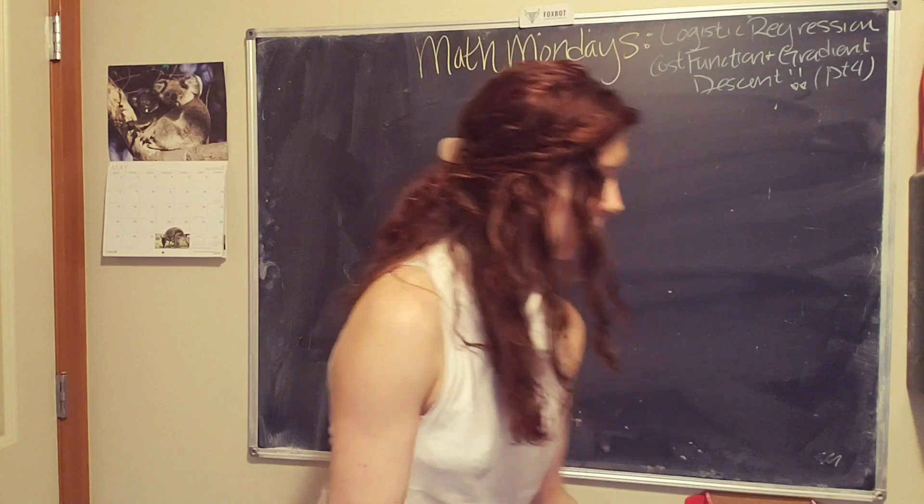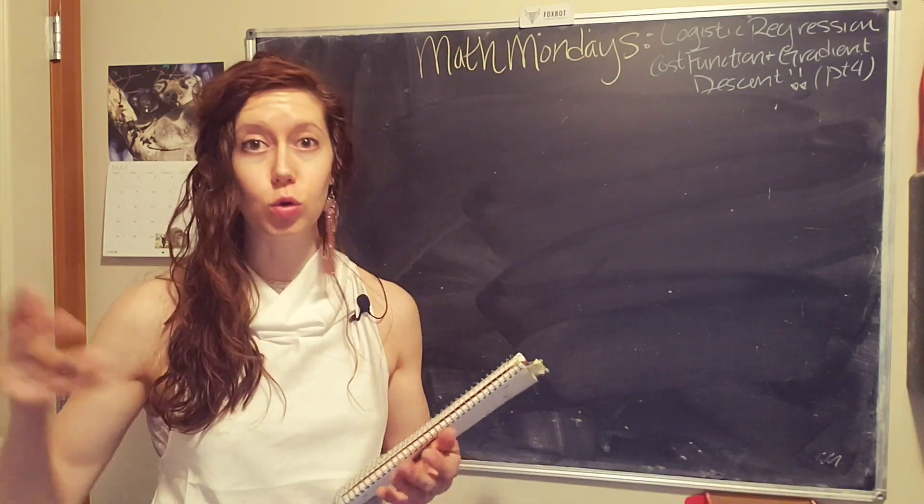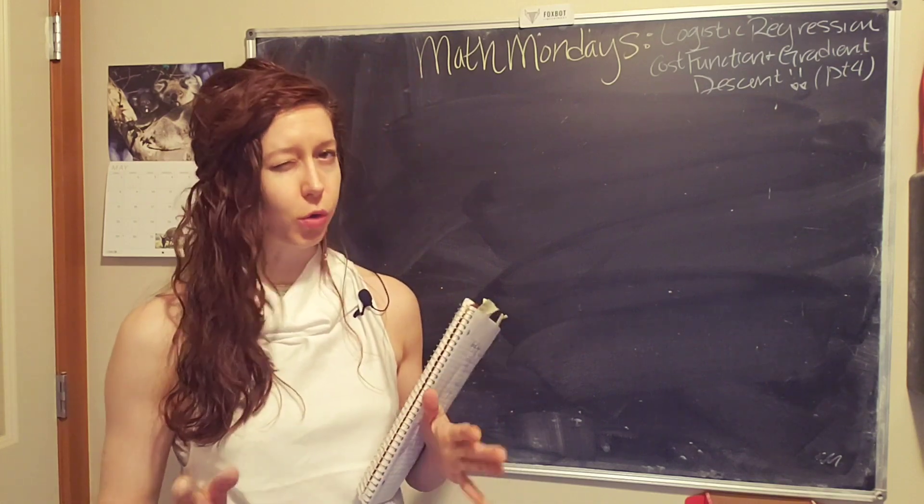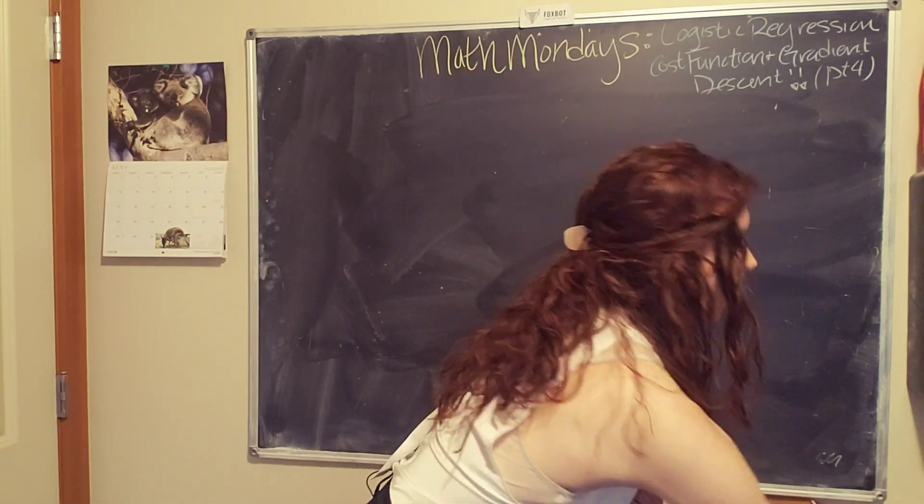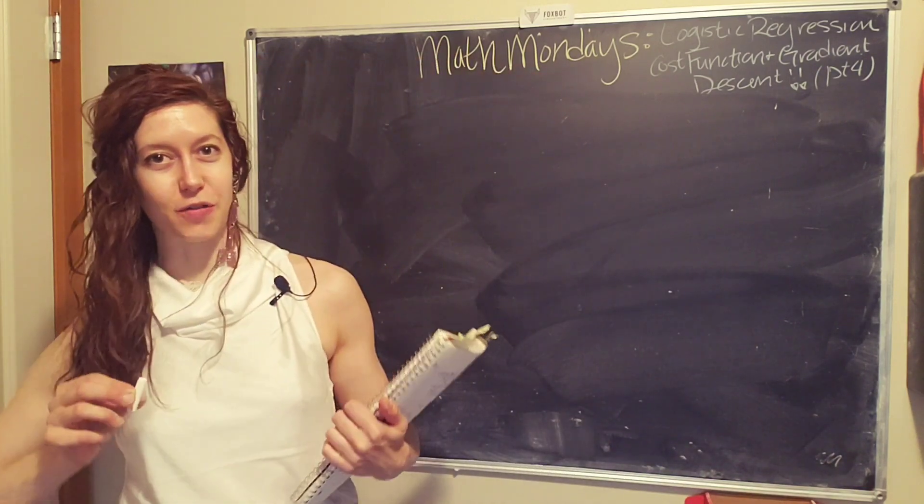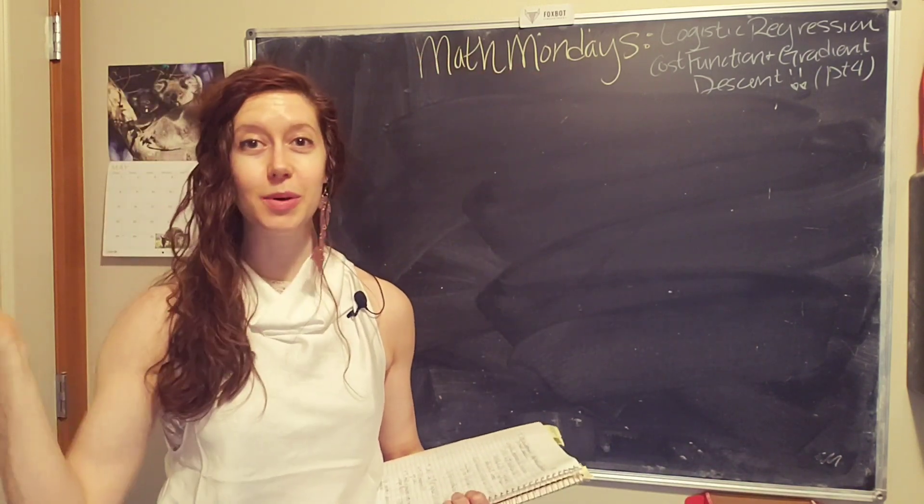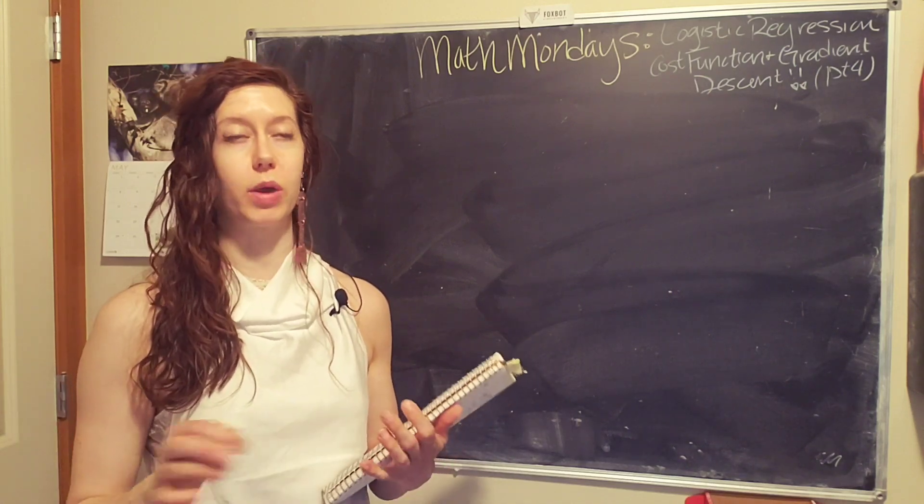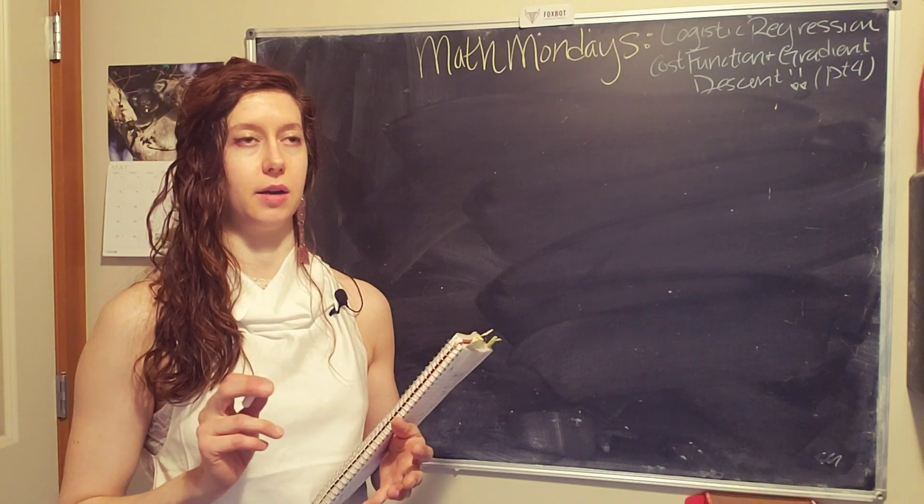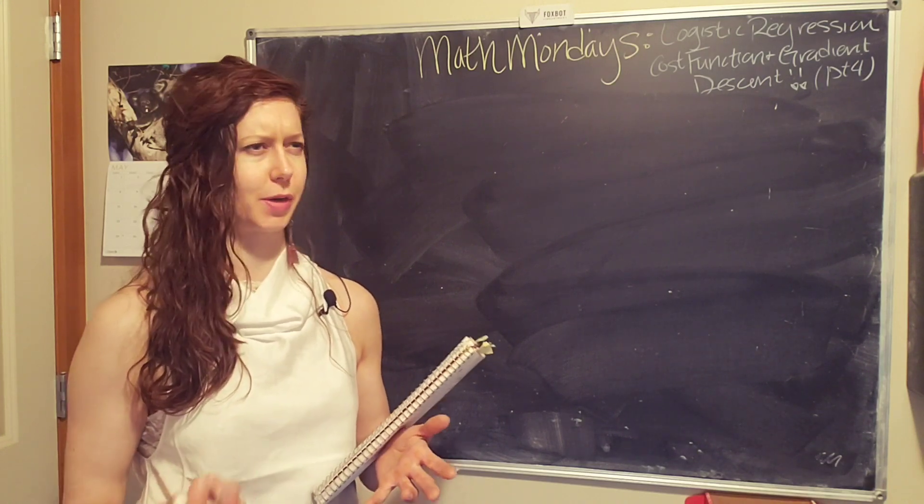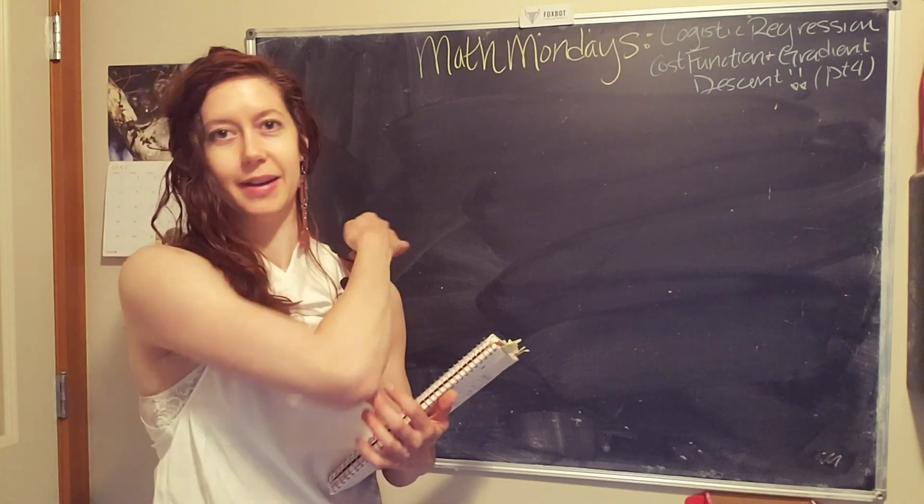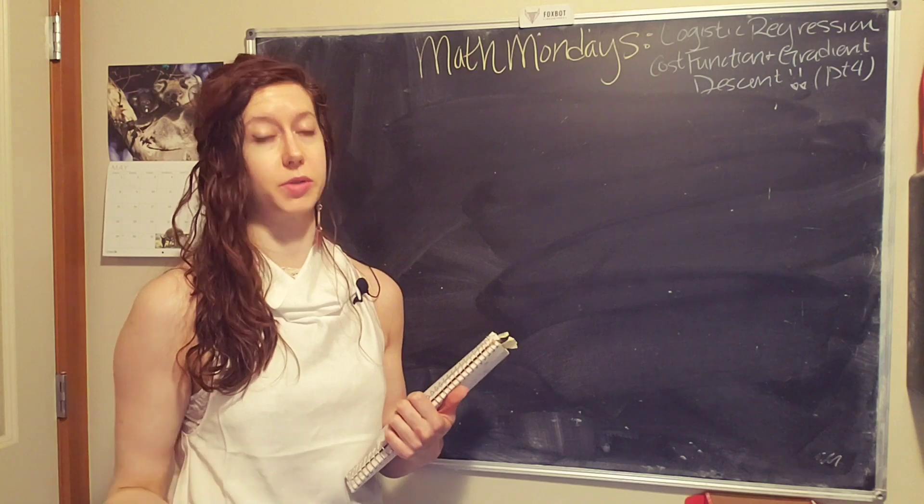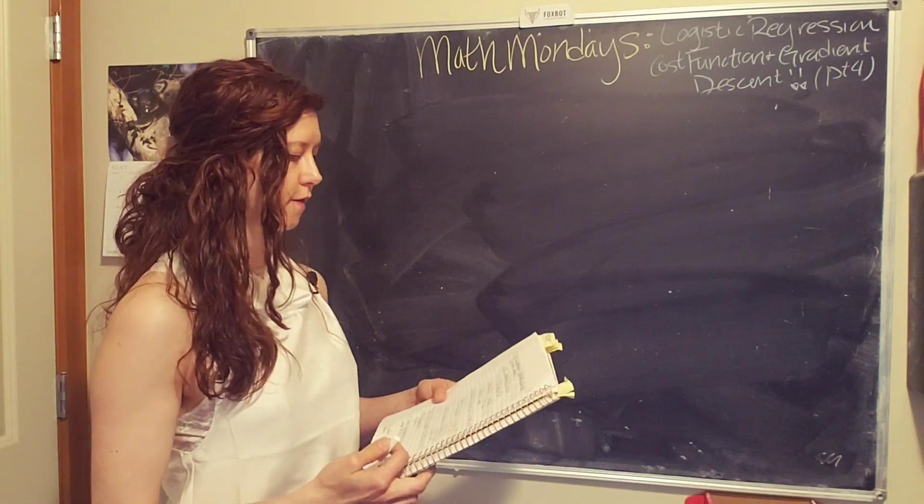Okay, so last time we ended up with a general formula for the cost function, but we didn't totally finish it because our cost function is a sum and sort of a fancy average over all of our data. And if you remember, we ended up with kind of a separated formula. A function with brackets for both two different cases for y equals one and y equals zero. So we're going to take that and merge it into one function.